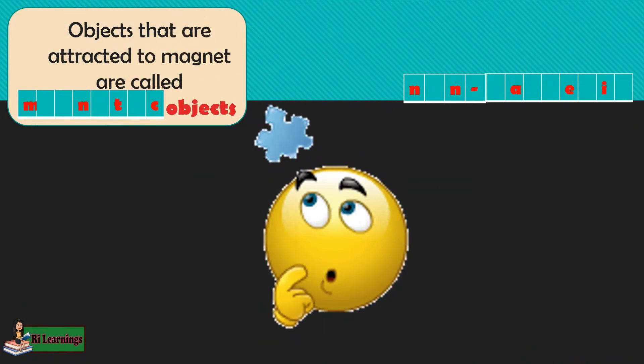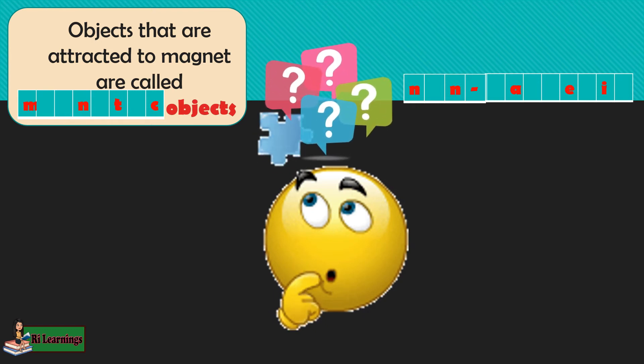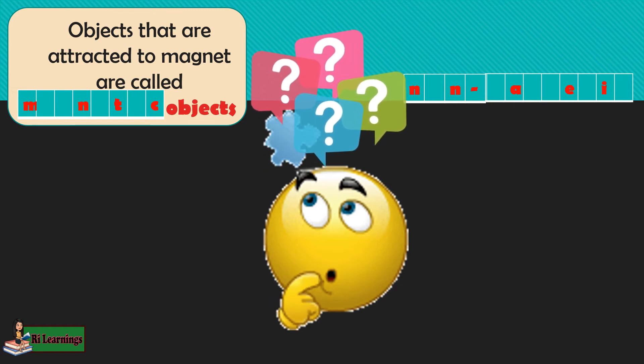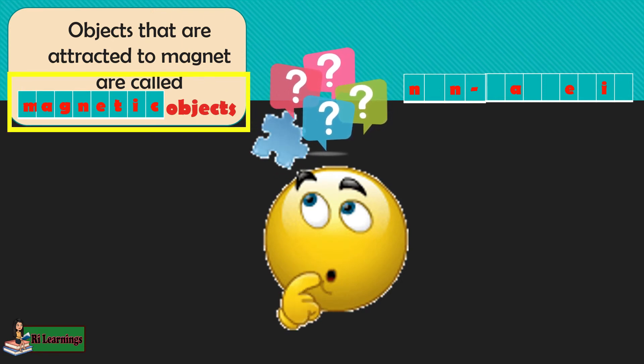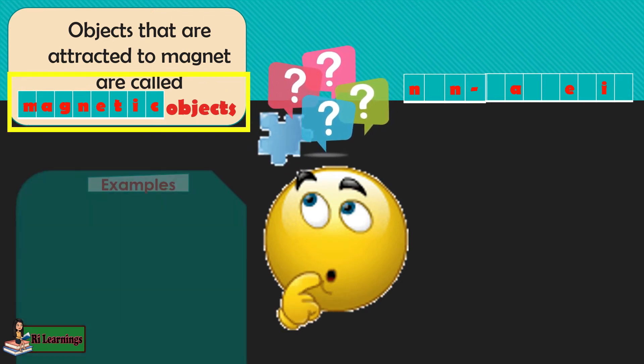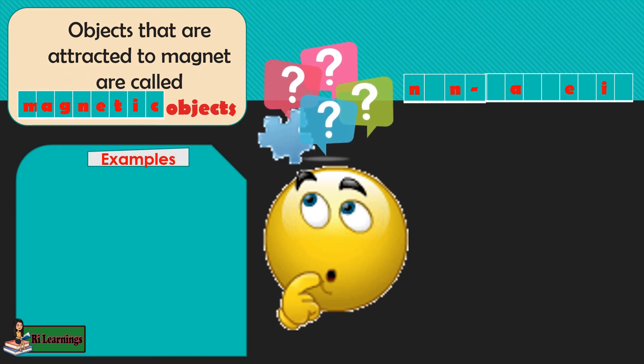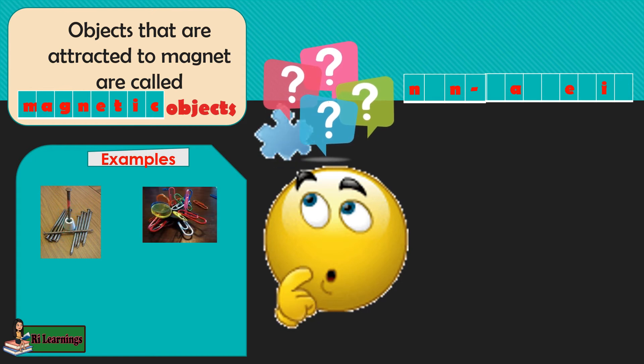What do we call the objects that are attracted to magnets? Can you guess? Very good. They are called magnetic objects. Examples of magnetic objects are nails, paper clips, coin, and scissors.